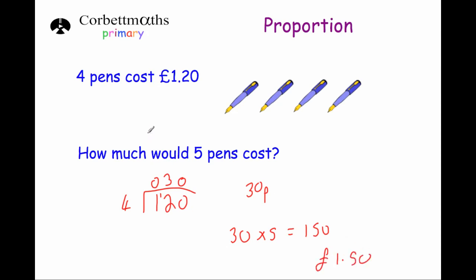So in a question like this, it can be useful to find the price of one item by dividing the total price by how many items there are, and then multiply it by how many you want to find the price of. We wanted five pens, so we did thirty times five. Five times zero is zero and five times three is fifteen, so the answer is 150 pence or £1.50.